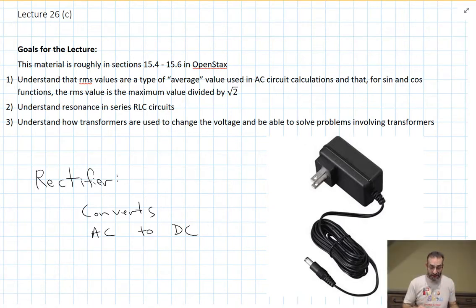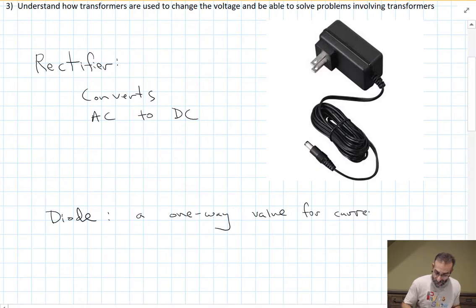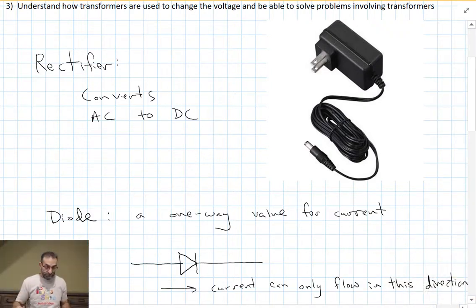The key component to a rectifier is the diode. A diode is like a one-way valve for electrical current. It allows current to flow in one direction but not the other direction. The symbol for the diode looks like this, and the arrow points in the direction that current can flow. Let's see how this makes conversion from AC to DC possible.